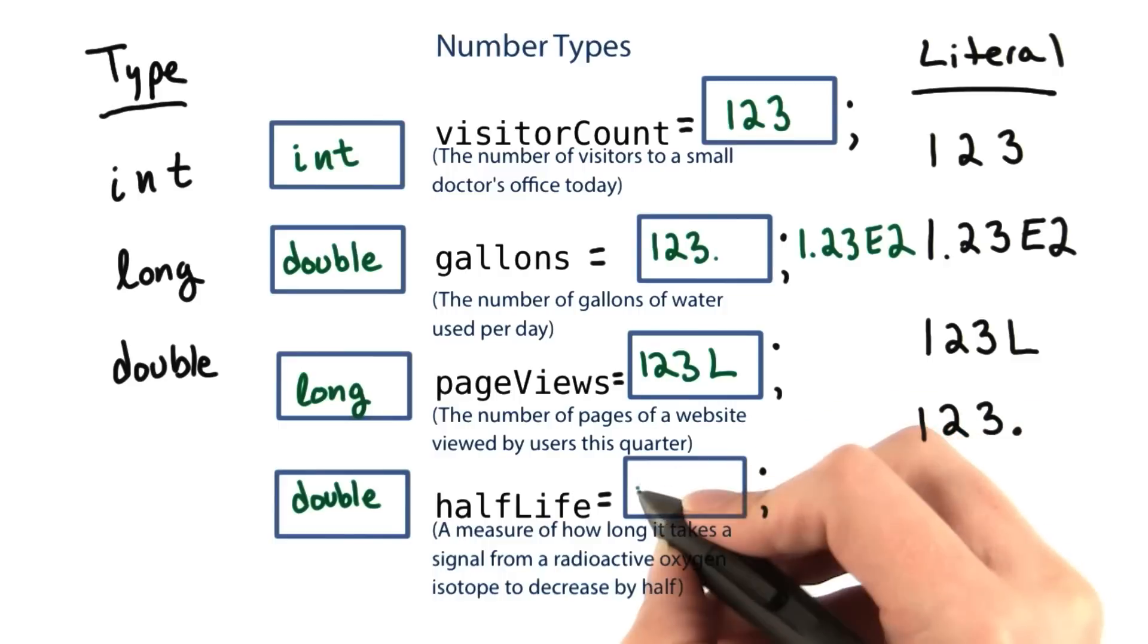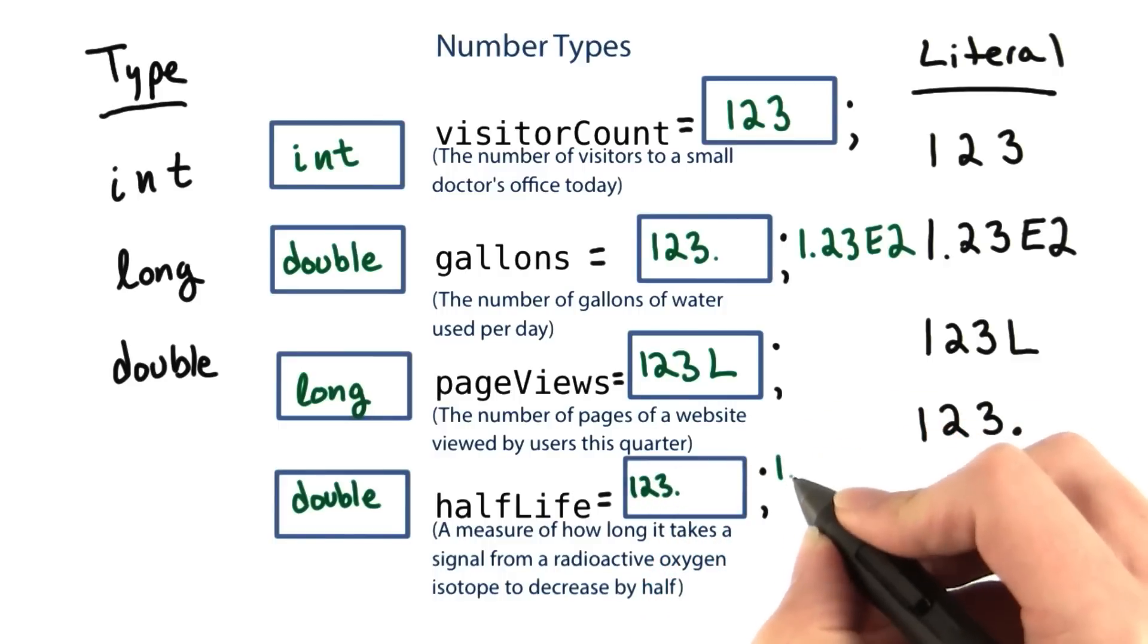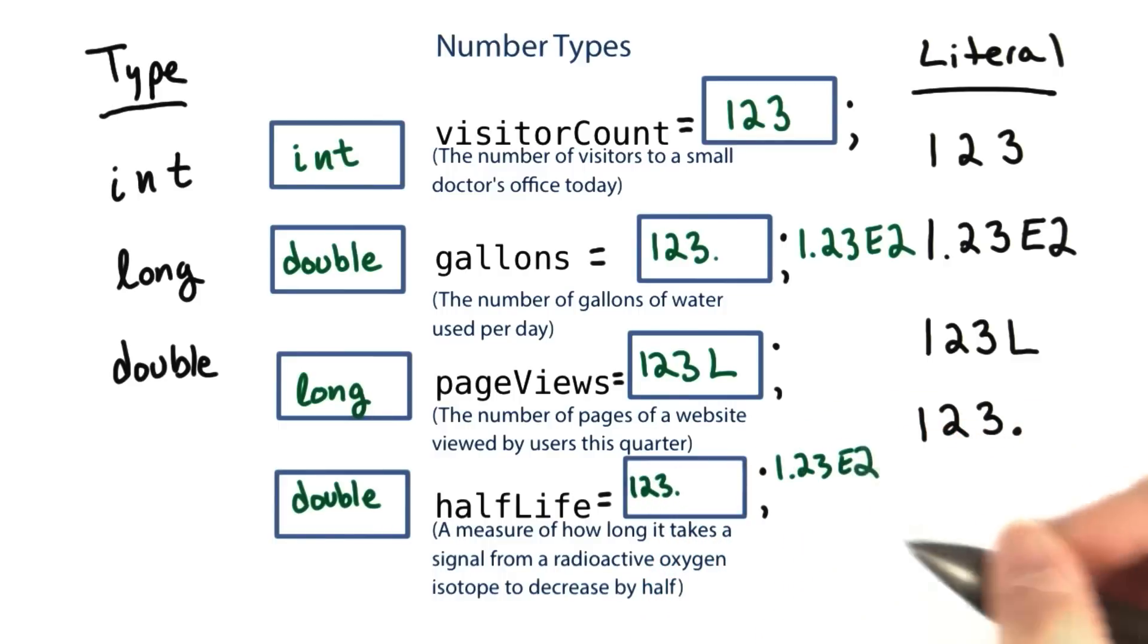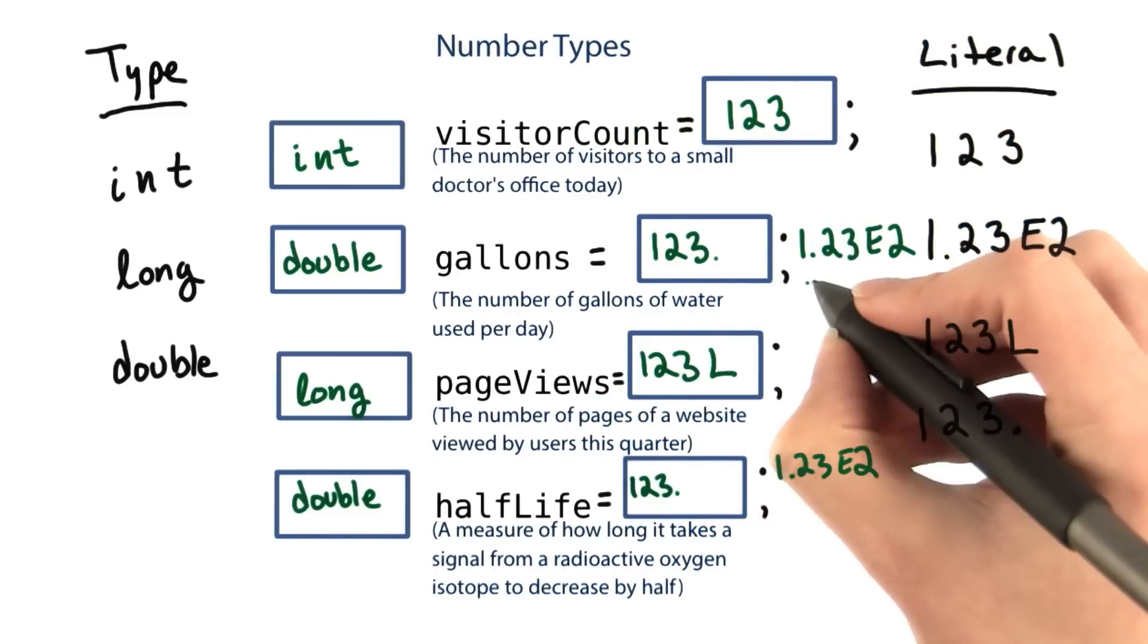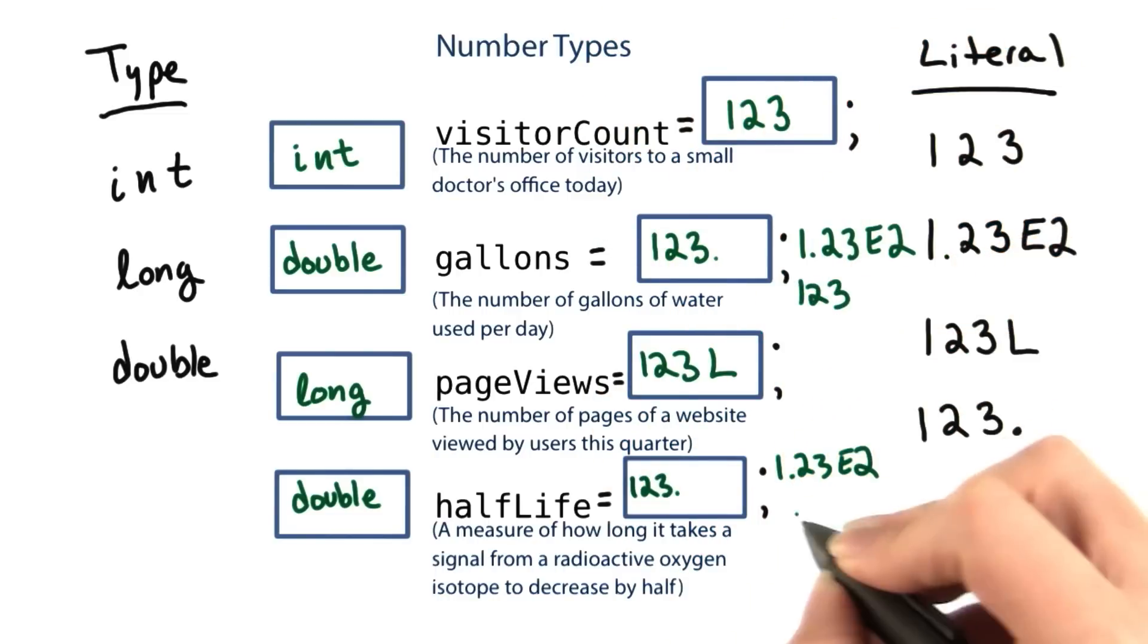We could initialize this again using 123 point or 1.23e2. And for this case, and also the gallons case, we could have just written 123. That would work as well.